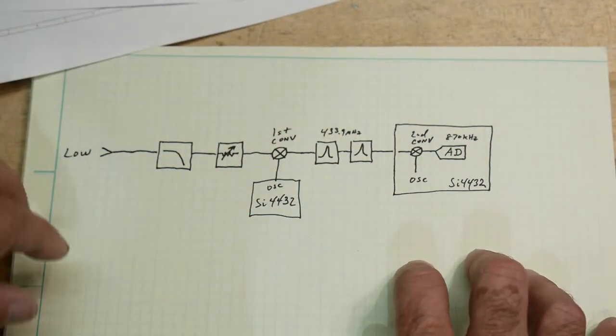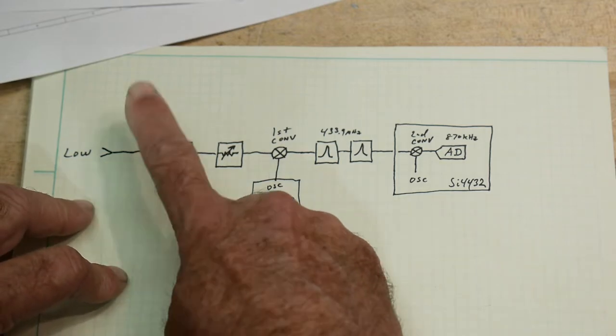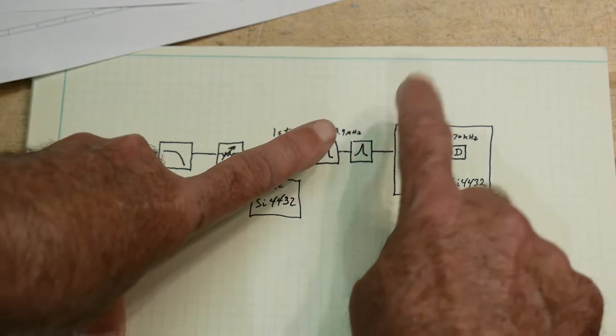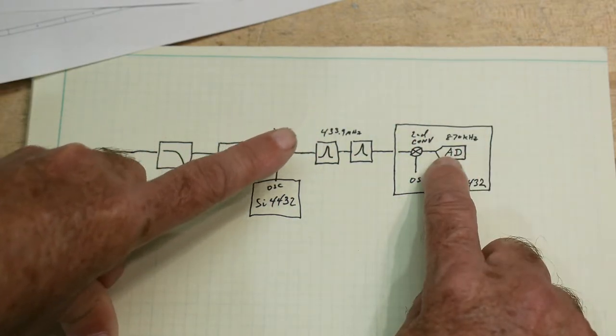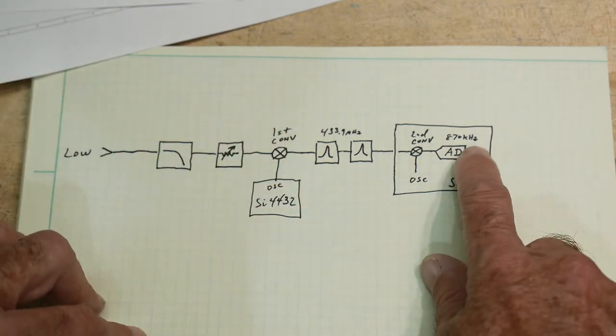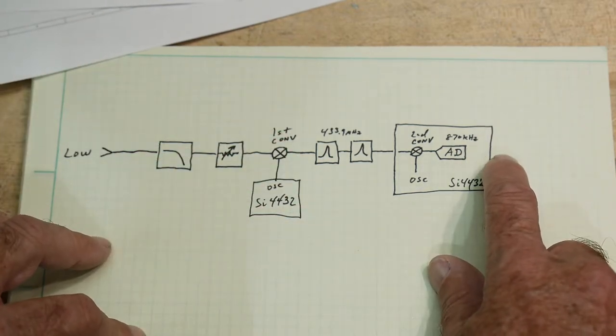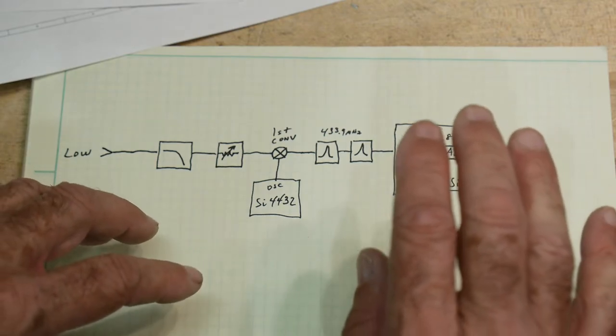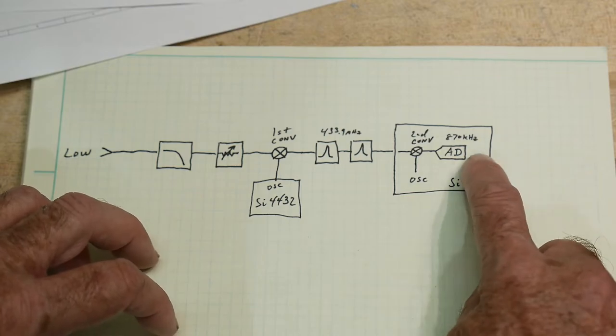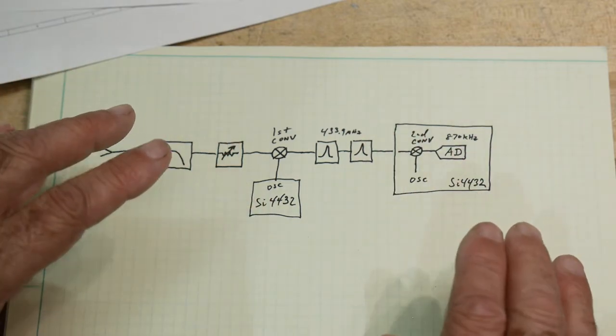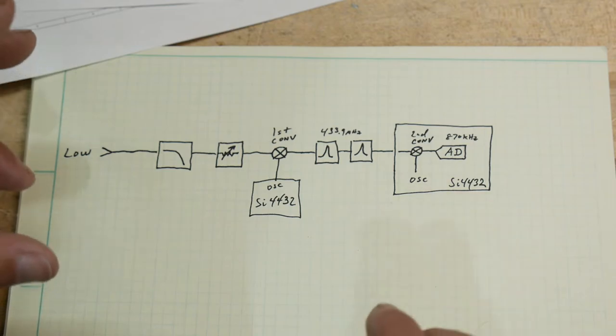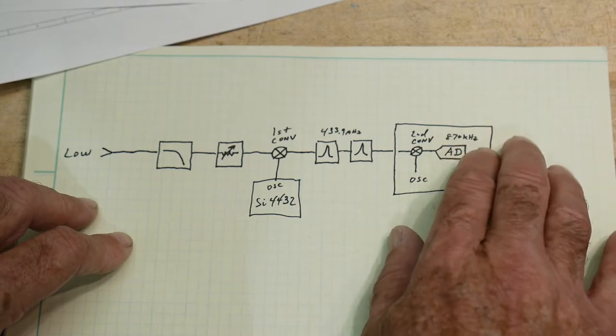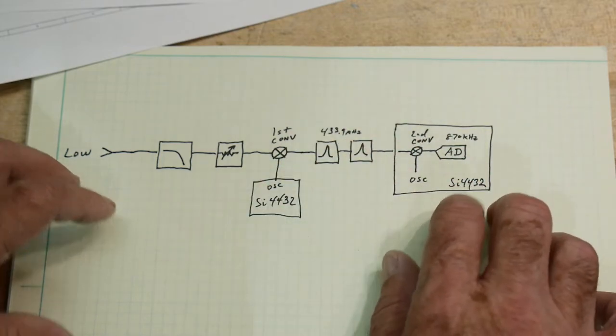So there's these two chips. So that is the TinySA. Low-pass filter, attenuator, first conversion, filter, second conversion, and then goes into the A to D, which then adds another filter and more processing. So the resolution bandwidth filters are after the A to D, so they're either DSP implemented or software implemented, however you want to think of it. They're over here in digital land, so they're not in analog land. They're in digital land.